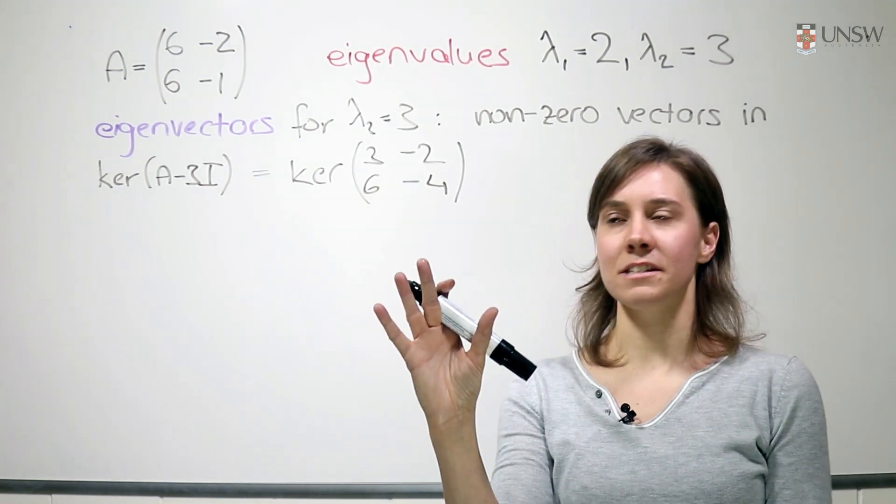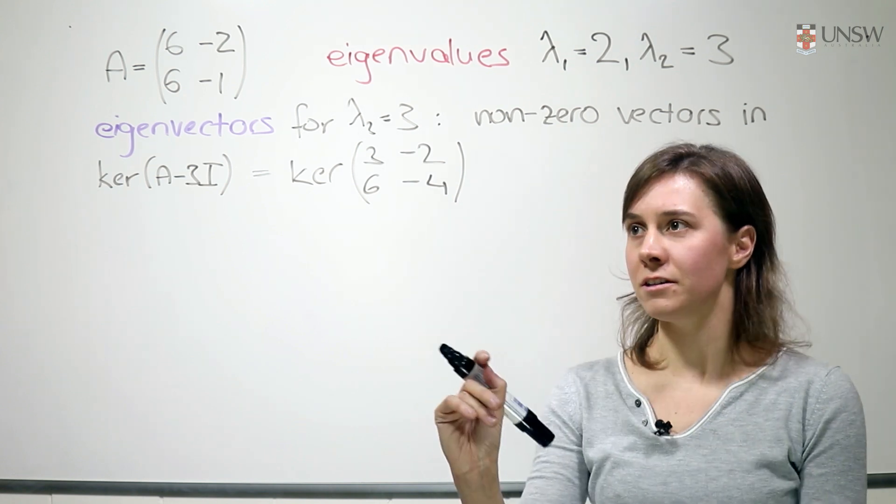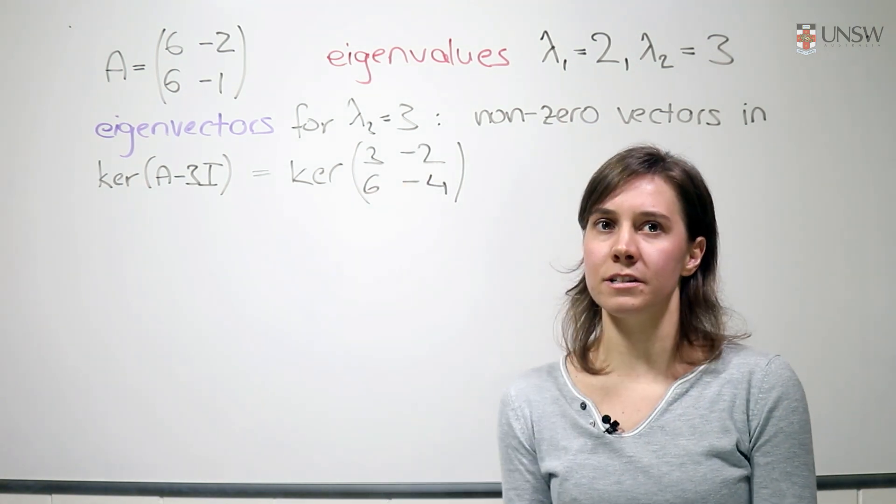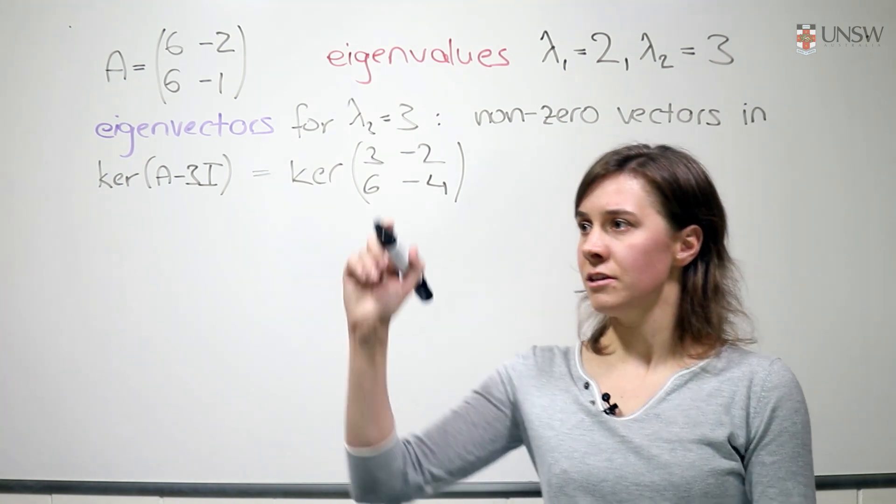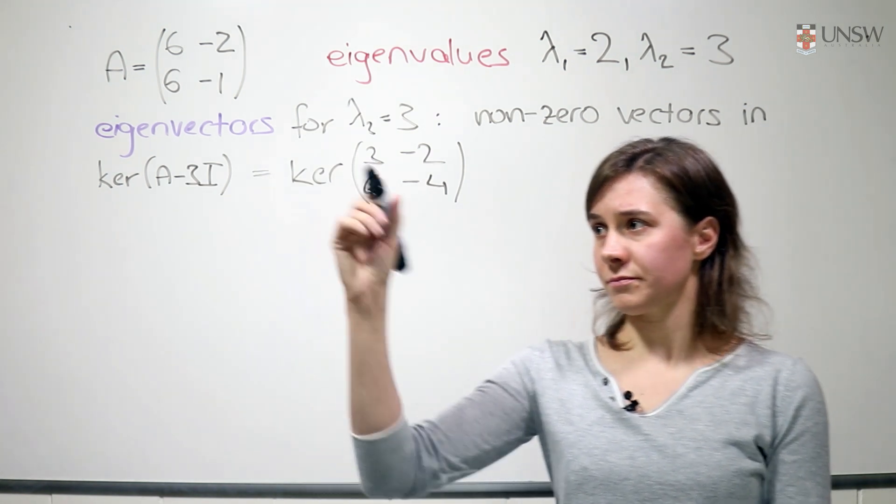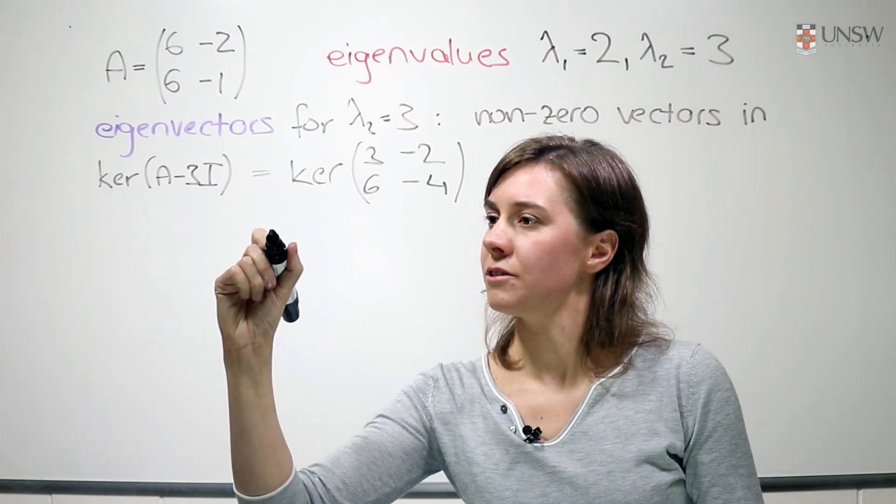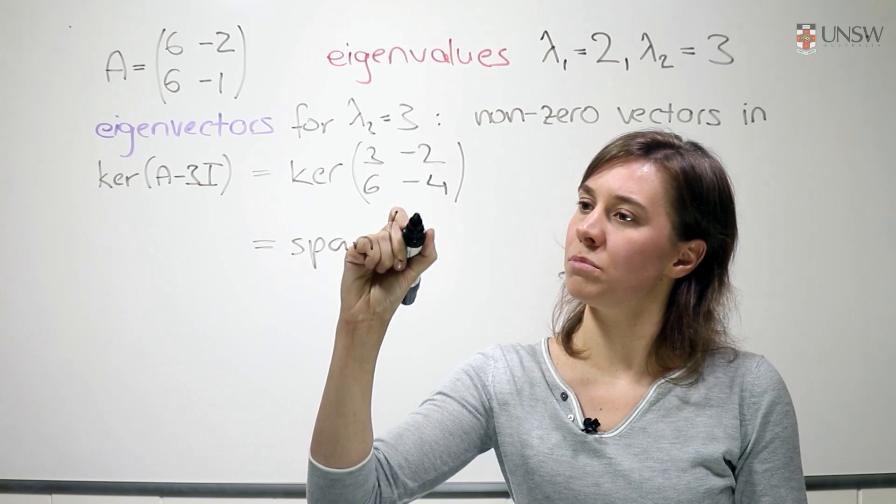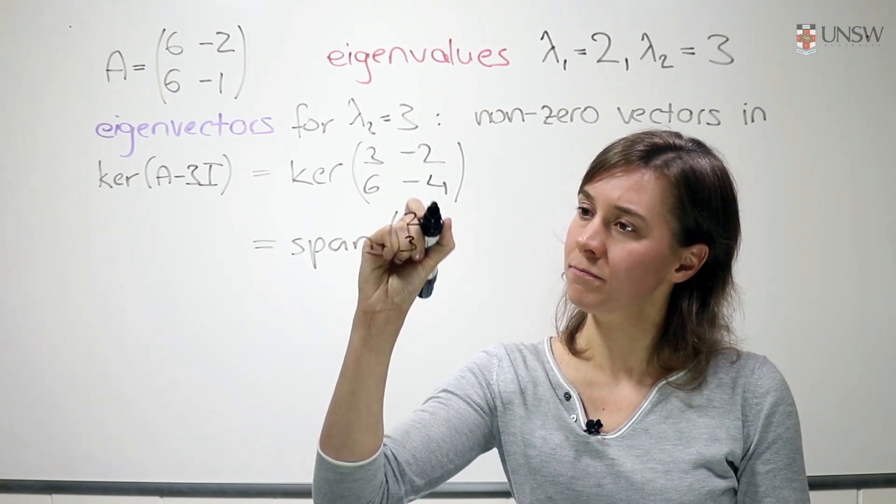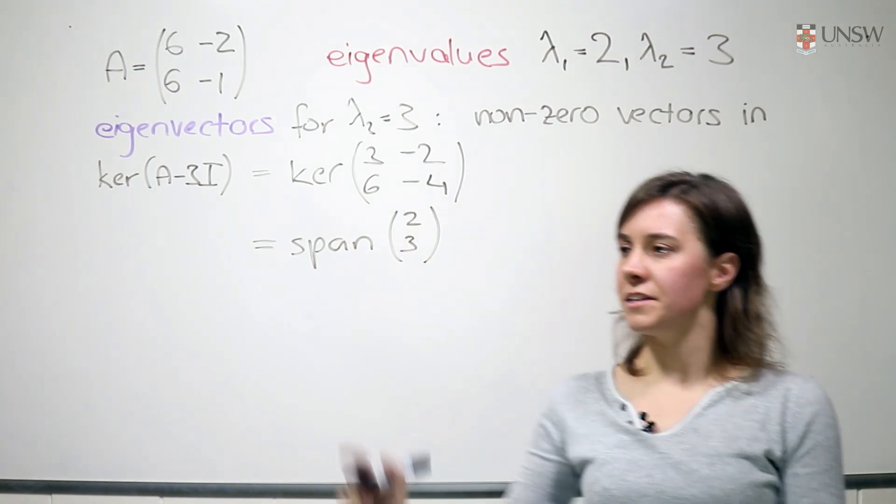And it's actually very easy to find a vector in that kernel just by looking at the first row. We know, for example, we see that 2 and 3 is a vector. So we know that this will be the span of 2 and 3.